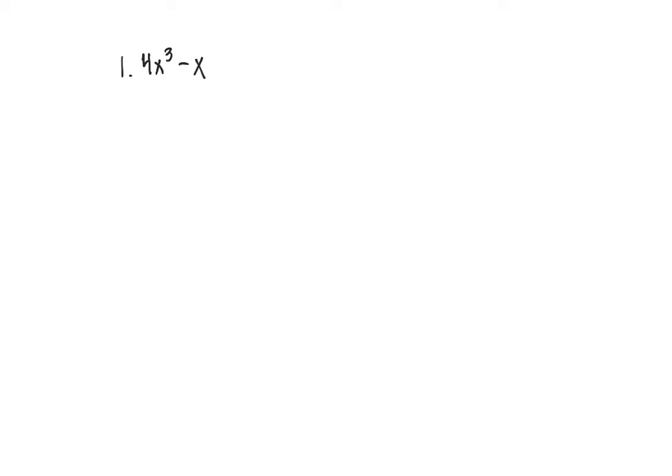This is some extra factoring practice for our general factoring strategies. Our first problem says 4x cubed minus x, and we need to factor this. So what we need to do is look and see, is there a greatest common factor that I can factor out? The answer is yes, I can factor out an x, and that gives me 4x squared minus 1.